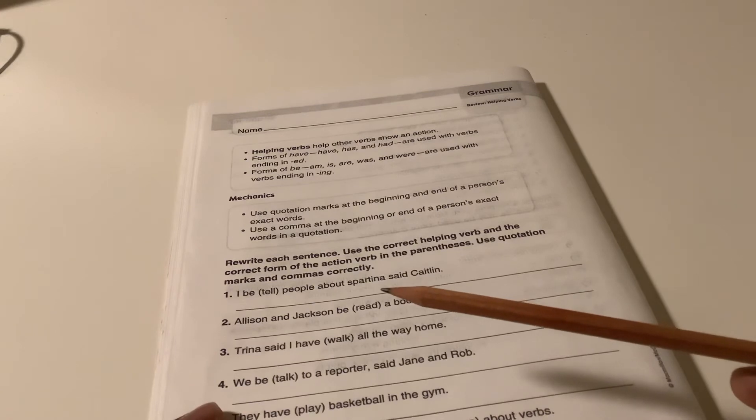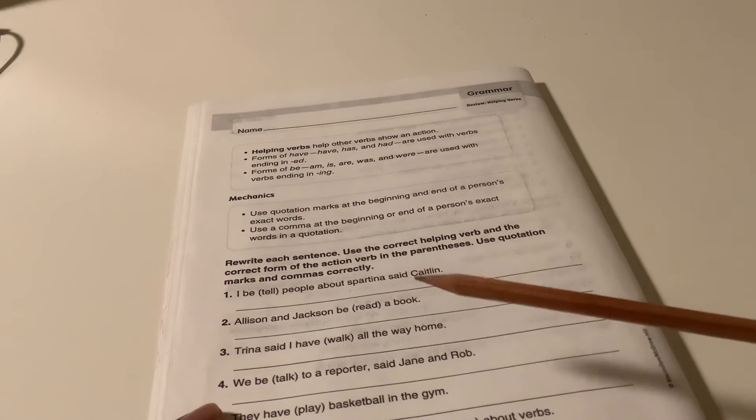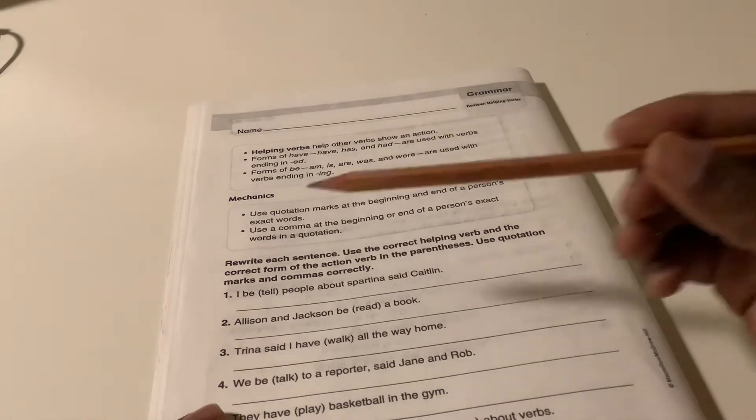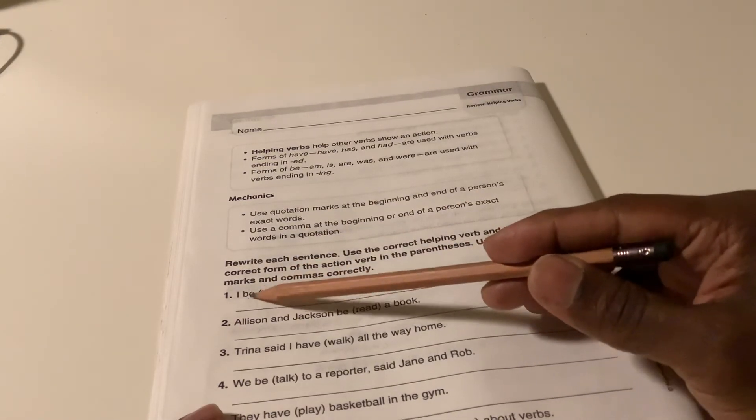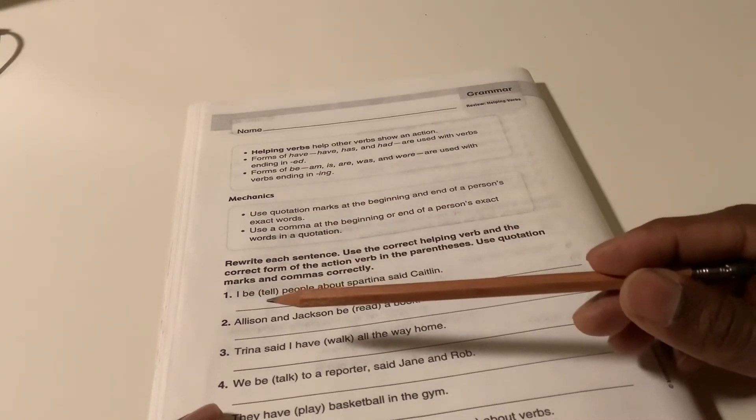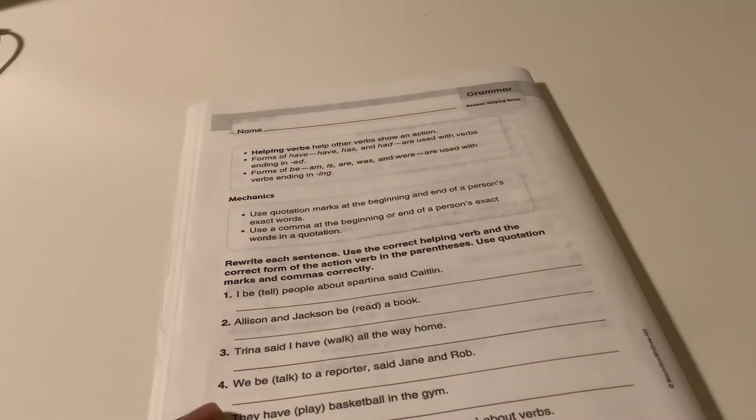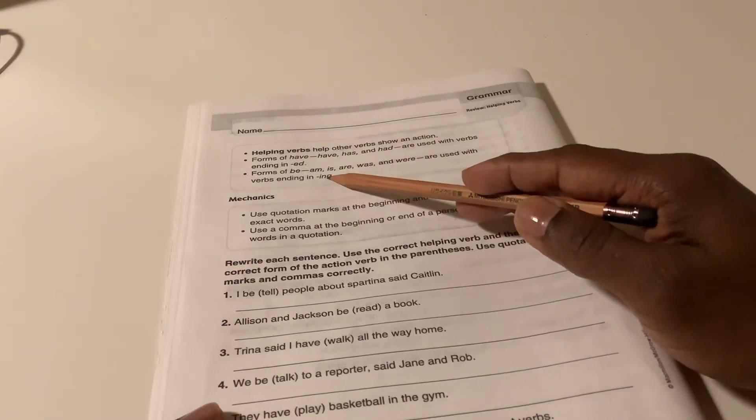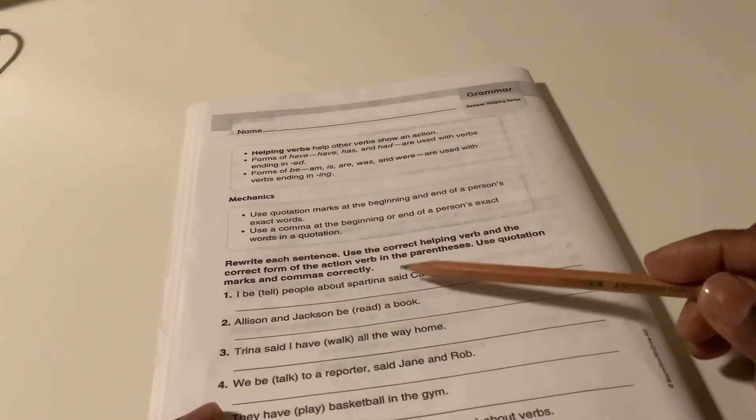Number 1, I be people about Spartina said Caitlin. Now, the verb is tell, so you need to correct the incorrect helping verb. And then, you're going to use the correct form of the action verb. So, some action verbs will have ed, or ing. You have to pay attention to the tense.